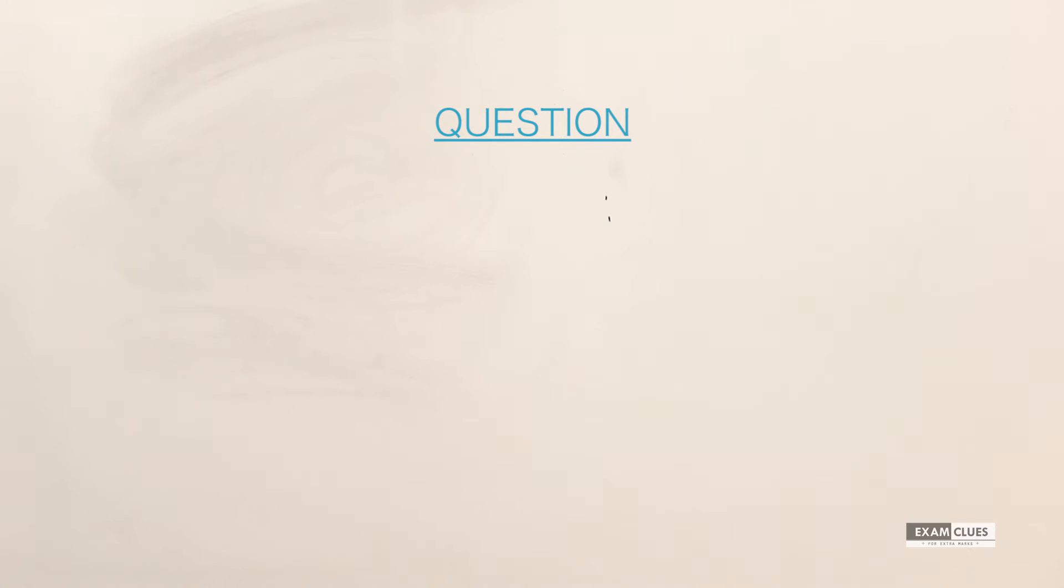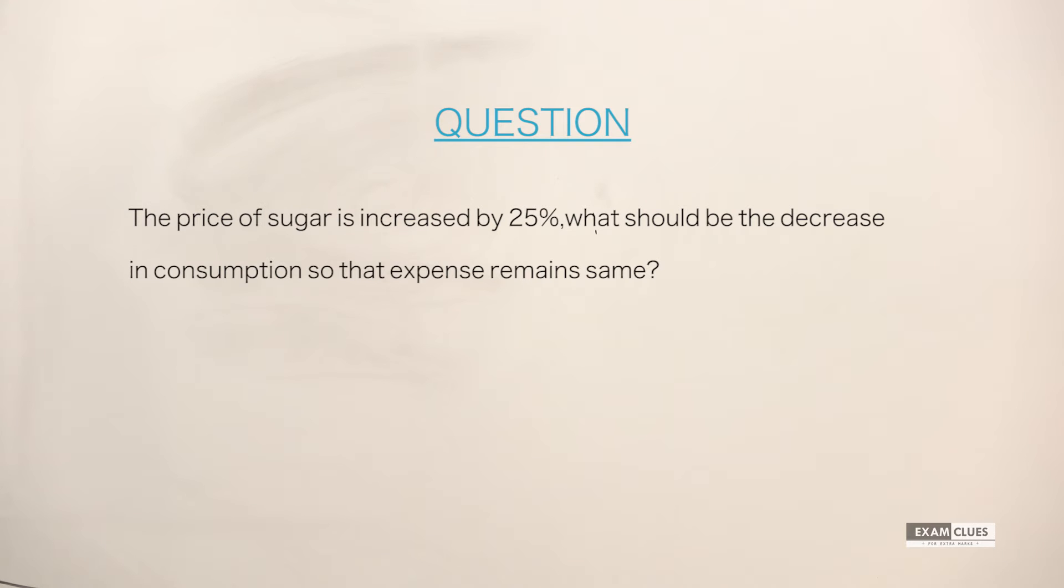Let's look at the question now. The question is: the price of sugar is increased by 25%. Now what should be the decrease in consumption so that the expense on sugar should remain the same?